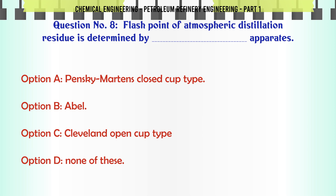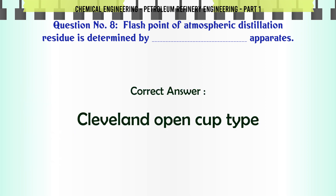The flash point apparatus for lubricating oils is: A. Pensky-Martens closed cup type, B. Abel, C. Cleveland open cup type, D. None of these. The correct answer is Cleveland open cup type.